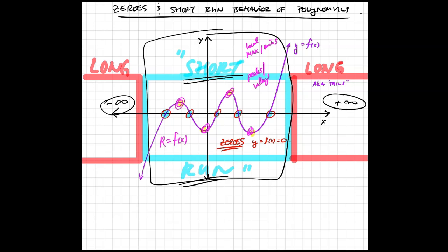And it has to do with how many times it turns around, the number of peaks and valleys, where those local maxes and mins are, and also what's called the zeros, so where the function equals zero, and that's these places right here.